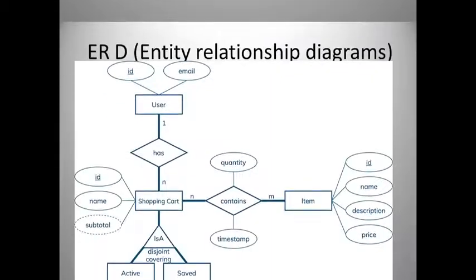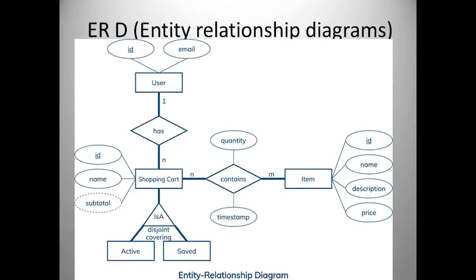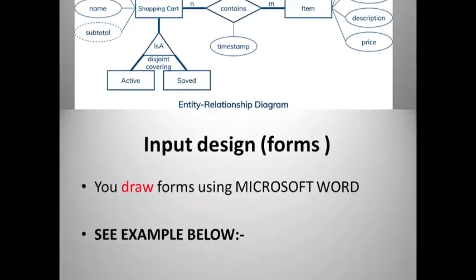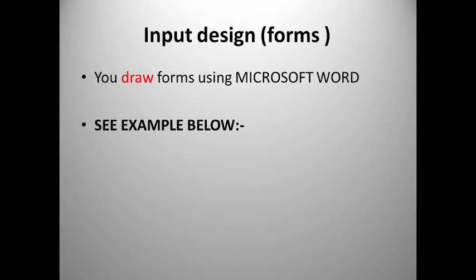You can also use Entity Relationship Diagrams (ERDs) instead of the flowchart. In an ERD, rectangles are used for entities, and ellipses are used for attributes or characteristics. For example, a User entity has ID and email attributes; a Shopping Cart has a name and ID; and an Item has ID, name, description, and price. Just below this video there are links to tutorials on how to come up with an ER diagram for your system project — you can opt to watch those.